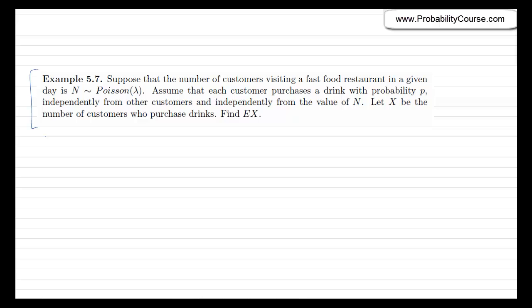Let's look at an example. Suppose the number of customers visiting a fast food restaurant in a given day is modeled by a Poisson random variable N with parameter λ. Each customer purchases a drink with probability p, independently from other customers and independently from the value of N. Let X be the number of customers who purchase drinks. Our goal is to find E[X]. I suggest you try to solve the problem before watching the rest of the solution.